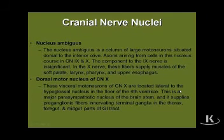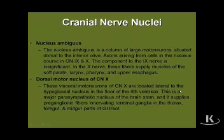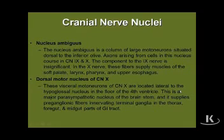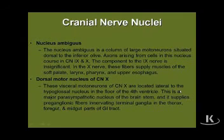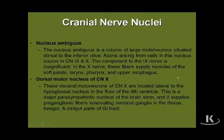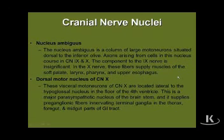On the next slide, we make the distinction between the nucleus ambiguus and the dorsal motor nucleus of 10. They both contain motor neurons. The difference is that the nucleus ambiguus contains lower motor neurons that innervate skeletal muscle, associated with cranial nerves 9 and mainly 10. Whereas the dorsal motor nucleus of 10 contains preganglionic parasympathetic neurons associated with cranial nerve 10, serving terminal ganglia and participating in the innervation of smooth muscle and glands in the thorax and most of the abdomen.